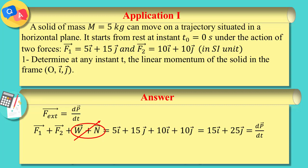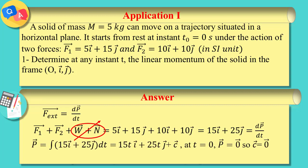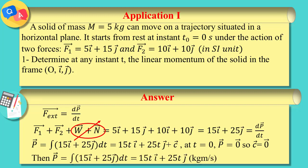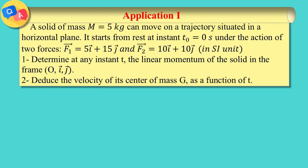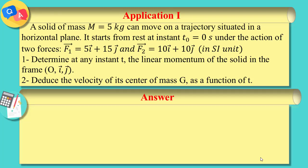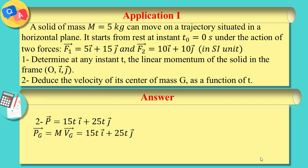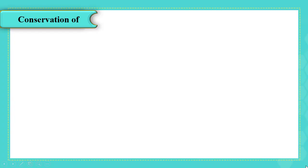To find the linear momentum, we take the antiderivative of the sum of forces, giving 15t·i plus 25t·j plus a constant. At t equals zero the linear momentum is zero, so the constant is zero. Therefore, the linear momentum is 15t·i plus 25t·j kilogram meters per second. To deduce the velocity of the center of mass g, we divide the linear momentum by the mass of 5 kg, giving the velocity vector as 3t·i plus 5t·j.